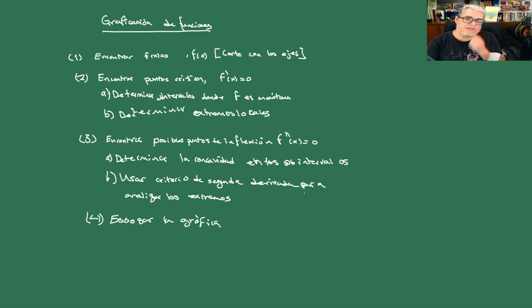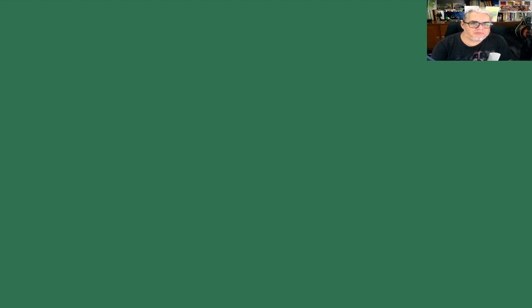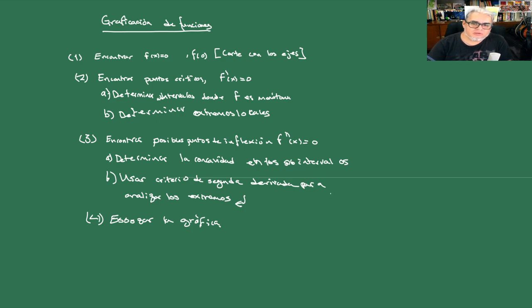Antes de empezar quiero aclarar cuándo podemos usar el criterio de segunda derivada. De momento nos interesan funciones continuas. Luego vamos a ver que esos extremos podrían ser extremos globales en ciertas condiciones, pero eso lo vemos luego. Entonces vamos a hacer un ejemplo de esto.